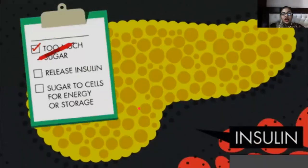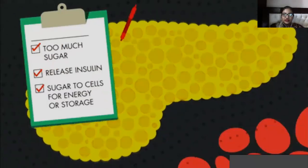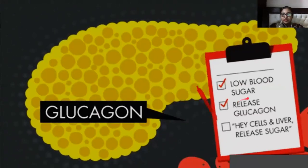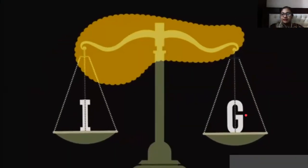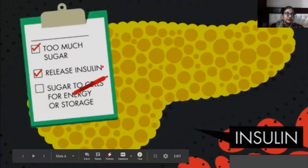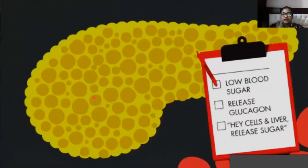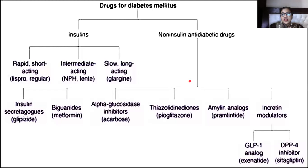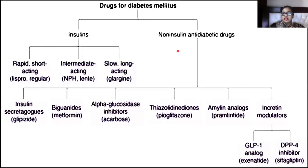Insulin is released when you have high blood sugar, directing sugar to cells for energy storage, while glucagon is released when you have low blood sugar. Now, for the classification of drugs used to control diabetes, we have two main classes: insulin and non-insulin anti-diabetic drugs.